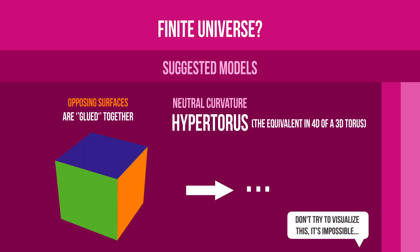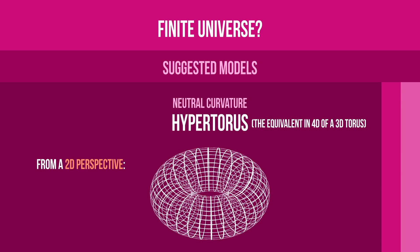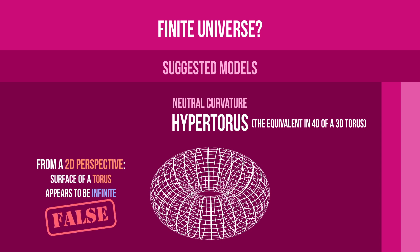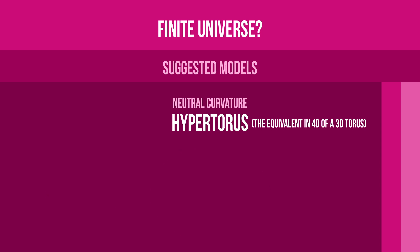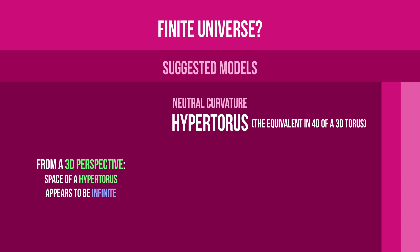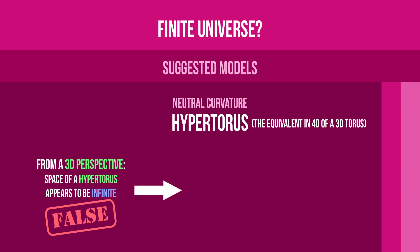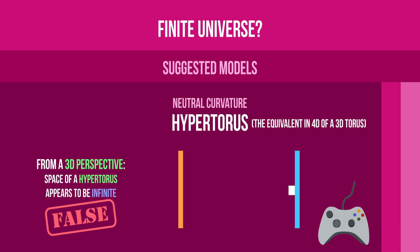Don't try to visualize this — it's impossible. From a 2D perspective, the surface of a torus appears to be infinite because there is no edge, but this is a false impression, easily realized in 3D. After traveling a certain distance on this surface, you eventually come back where you started. Likewise, from a 3D perspective — our perspective — the space of a hypertorus seems to be infinite, but in reality, isn't. If this is indeed the shape of our universe, it means that if we travel in a direction, we will eventually come back where we started, just like in a video game.